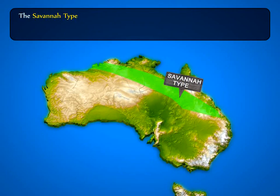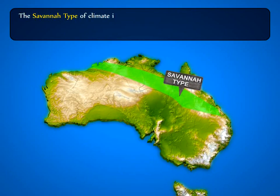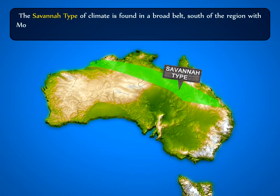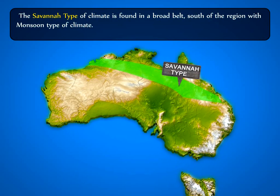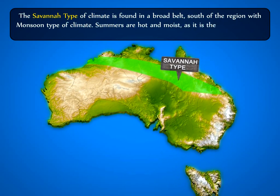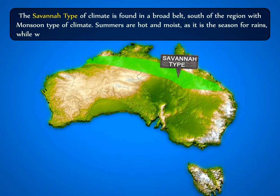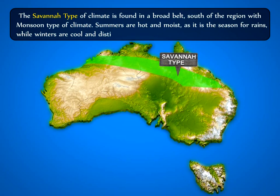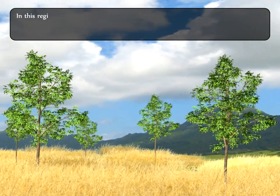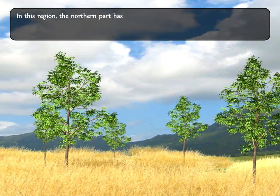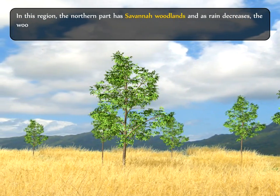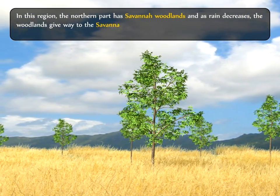The savannah type of climate is found in a broad belt south of the region with monsoon type of climate. Summers are hot and moist as it is the season for rains, while winters are cool and distinctly dry. In this region, the northern part has savannah woodlands and as rain decreases, the woodlands give way to savannah grass.